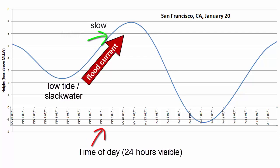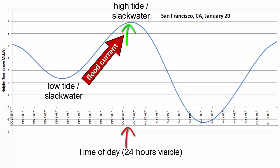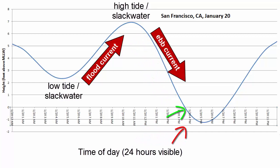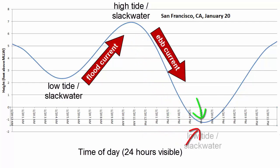The flood current slows down its advance as 11 a.m. approaches. At 11 a.m., it has reached another still point, or slack water, and we are now experiencing high tide. After high tide, the water starts to retreat from the coastline, slowly at first, then faster and faster as an ebb current. That current slows as 5 p.m. approaches, when we get yet another slack water and low tide.